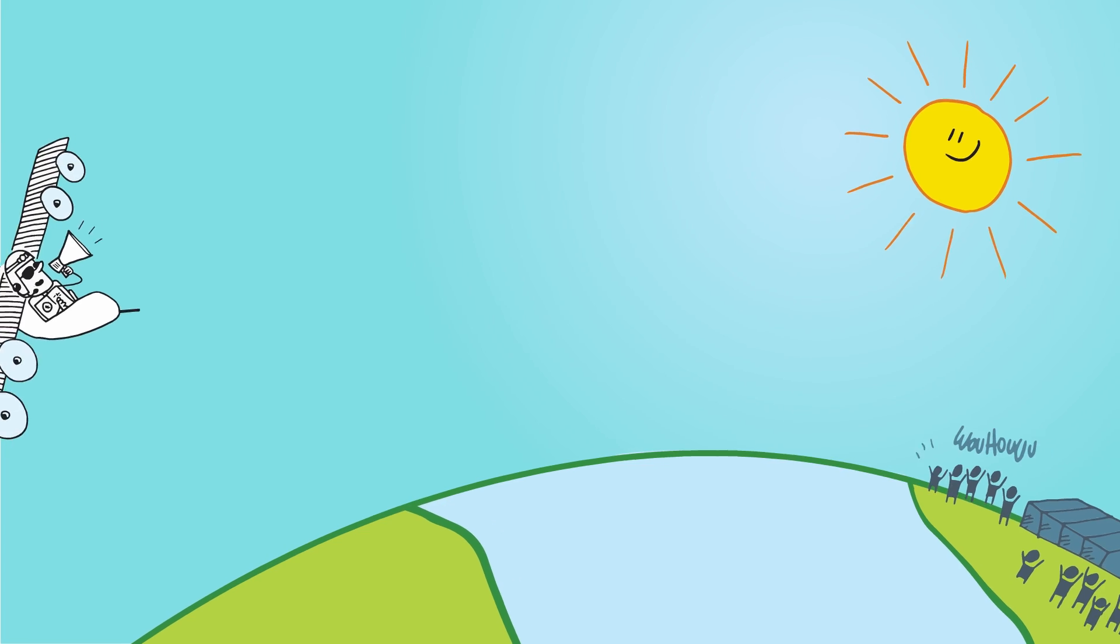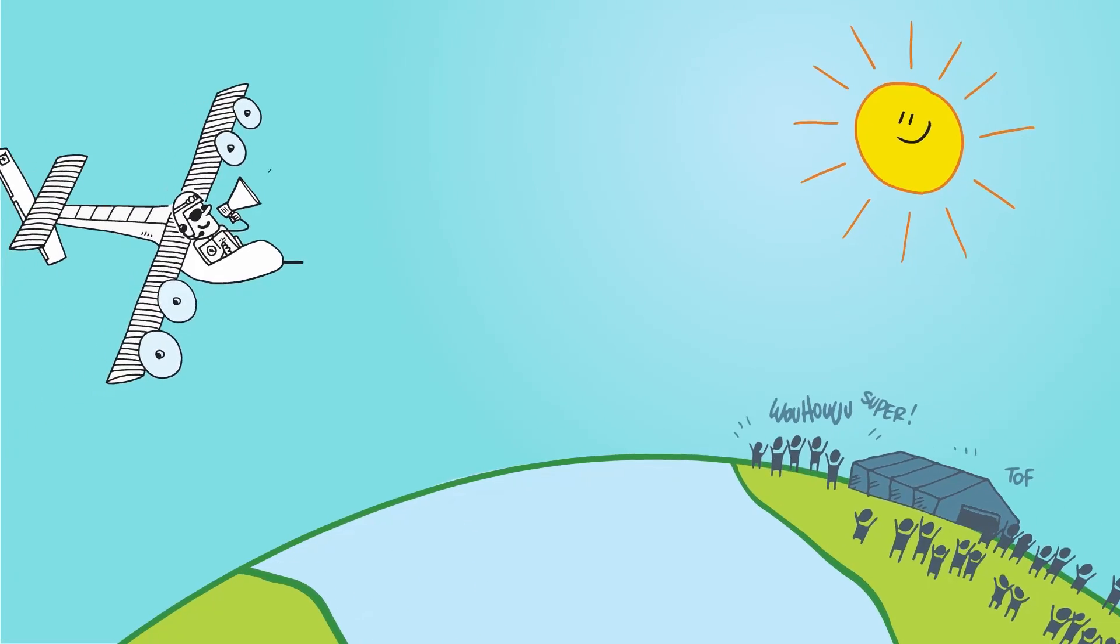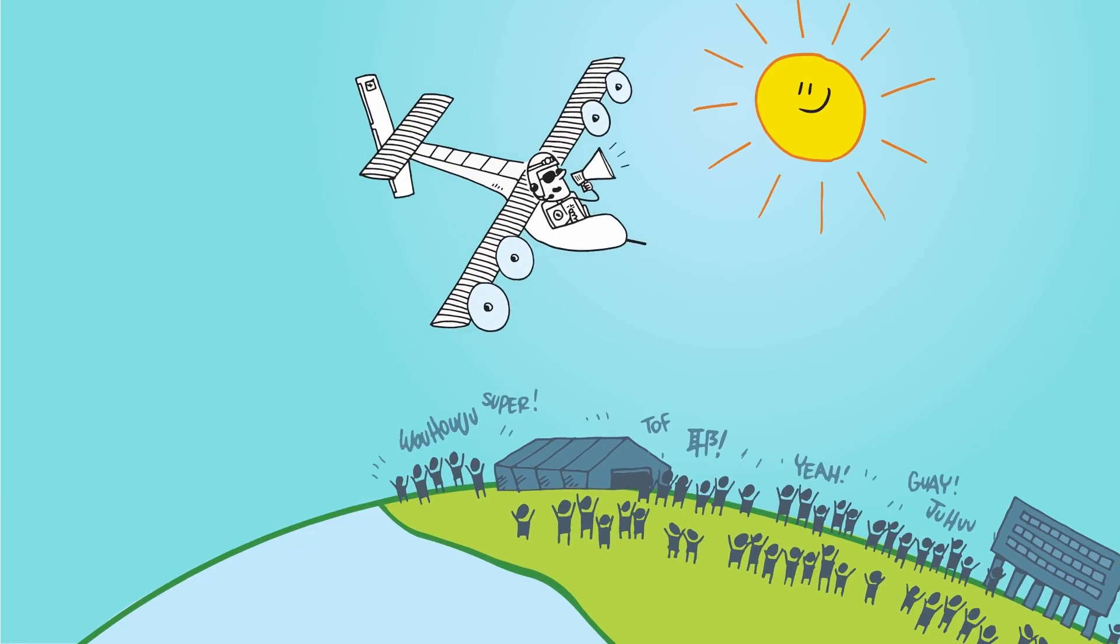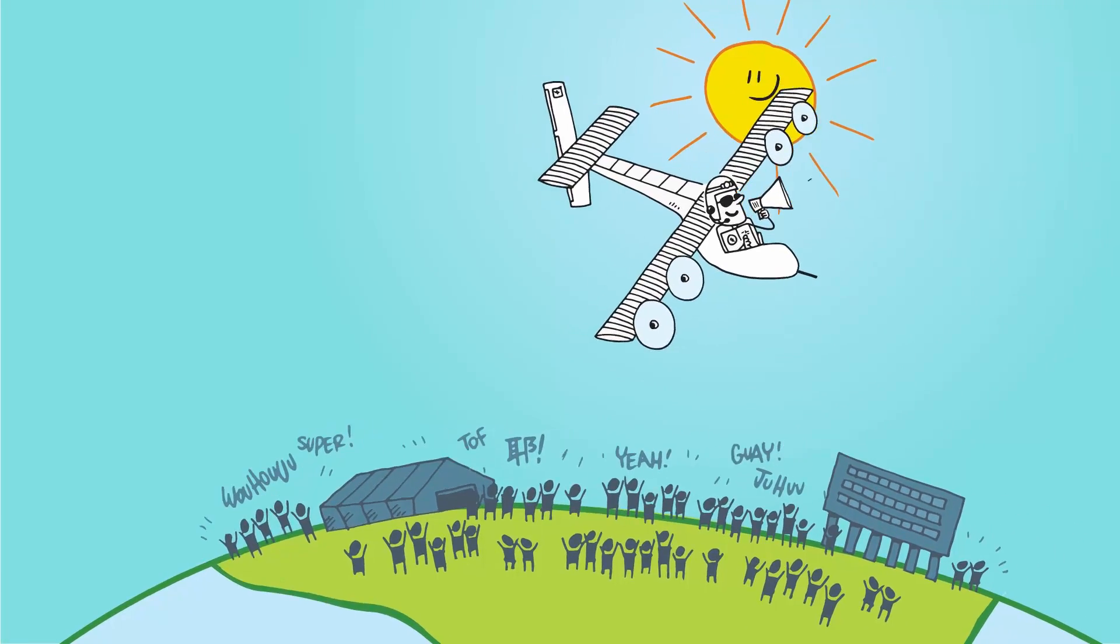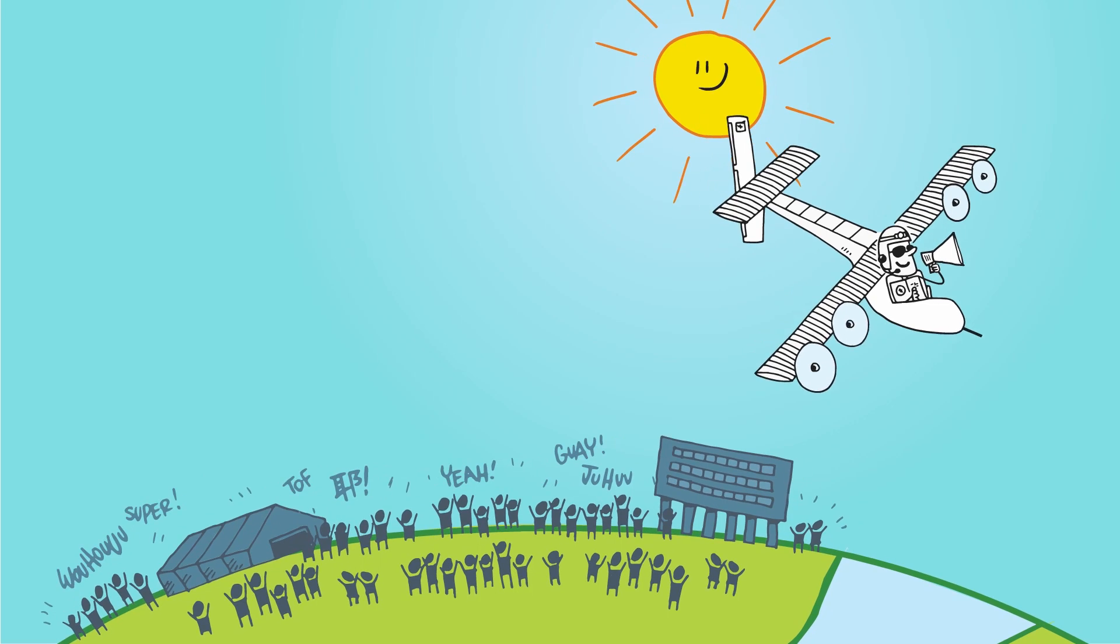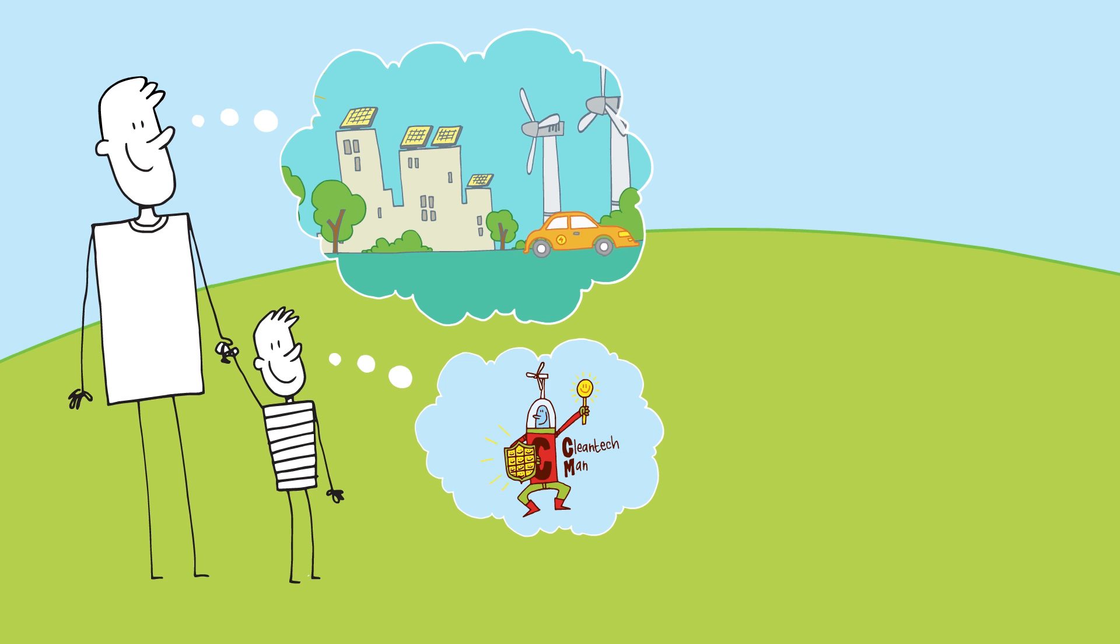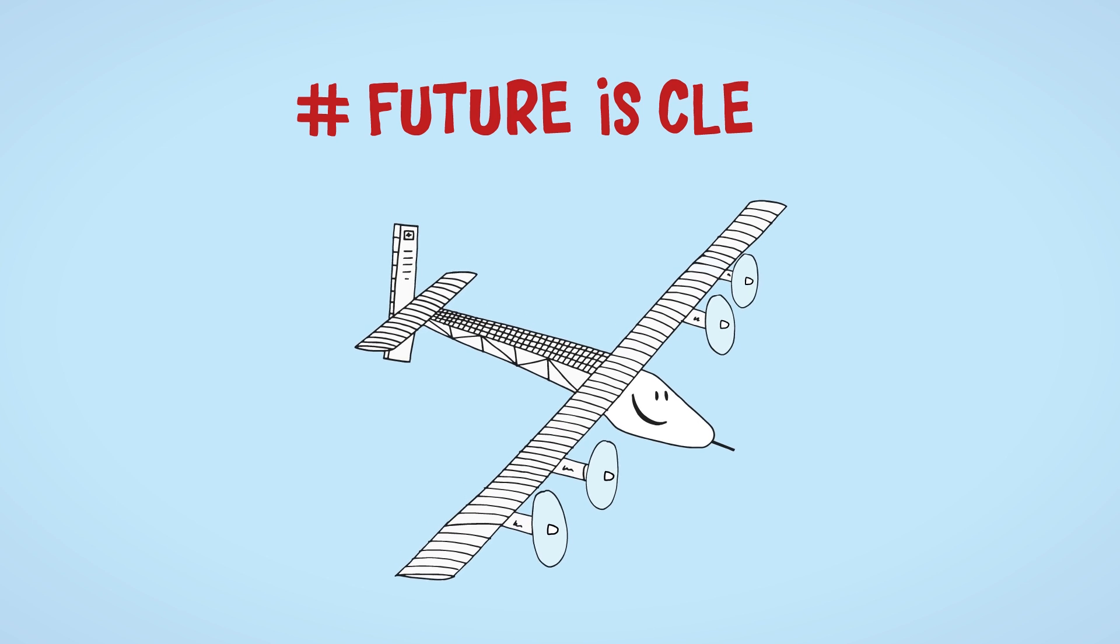By flying around the world, Solar Impulse delivers a strong message to present and future generations. Clean technologies can achieve the impossible in order to fight climate change. This solar airplane is a ray of hope, inspiring citizens to take concrete actions for tomorrow.